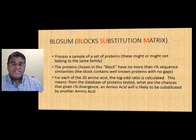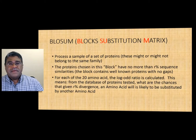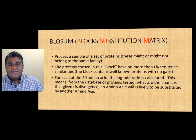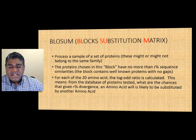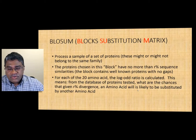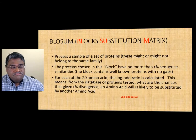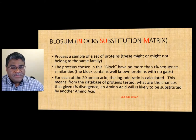Complementarily, if you know the sequences come from the same family and have high similarity, you'd use a higher BLOSUM number. For each of the 20 amino acids, the log-odds ratio is calculated — that is, from the database of proteins tested, what are the chances that, given a divergence of 62%, an amino acid is likely to be substituted by another amino acid?